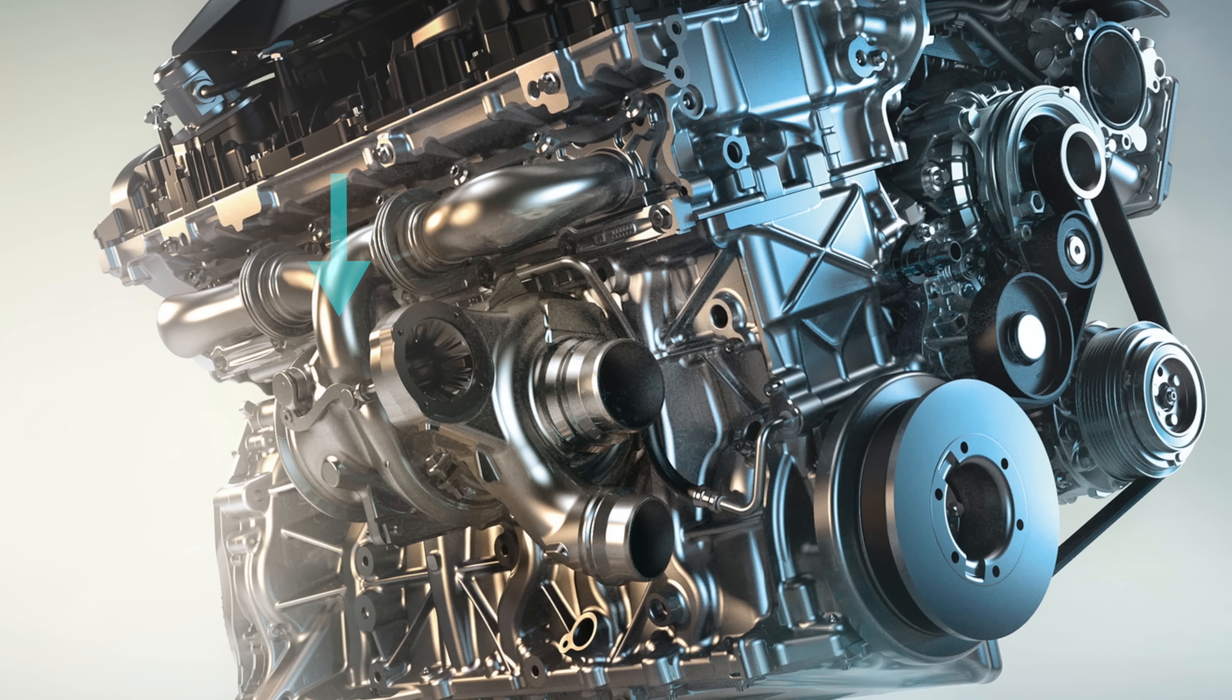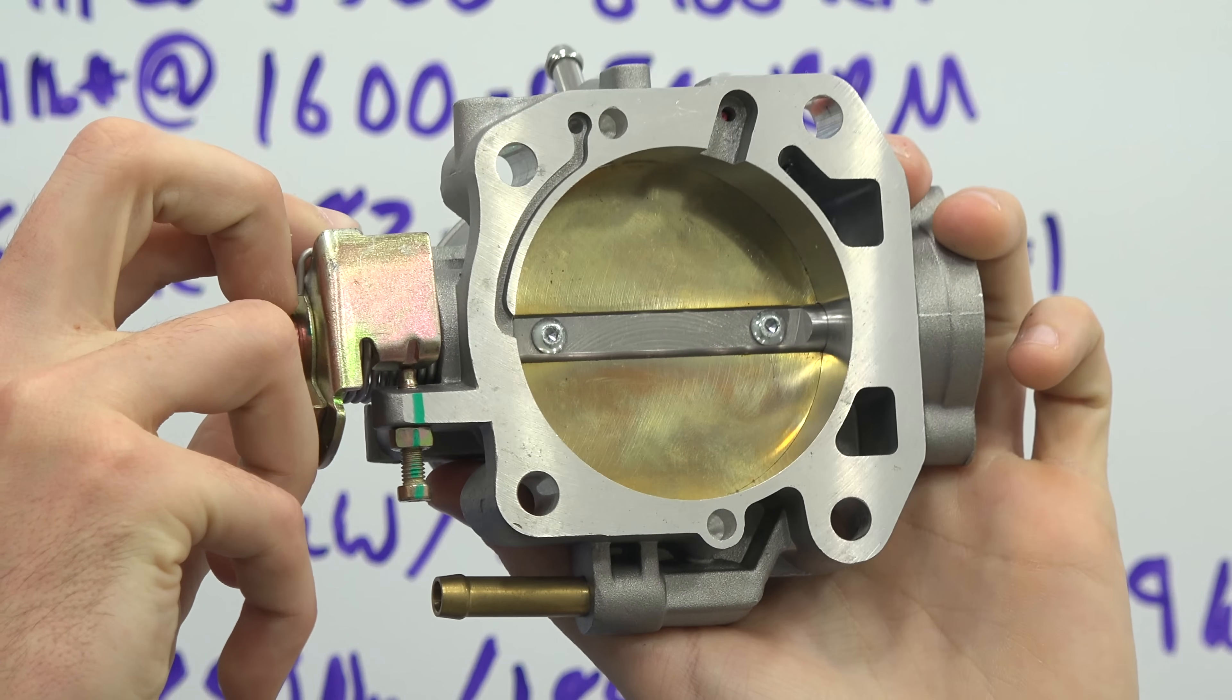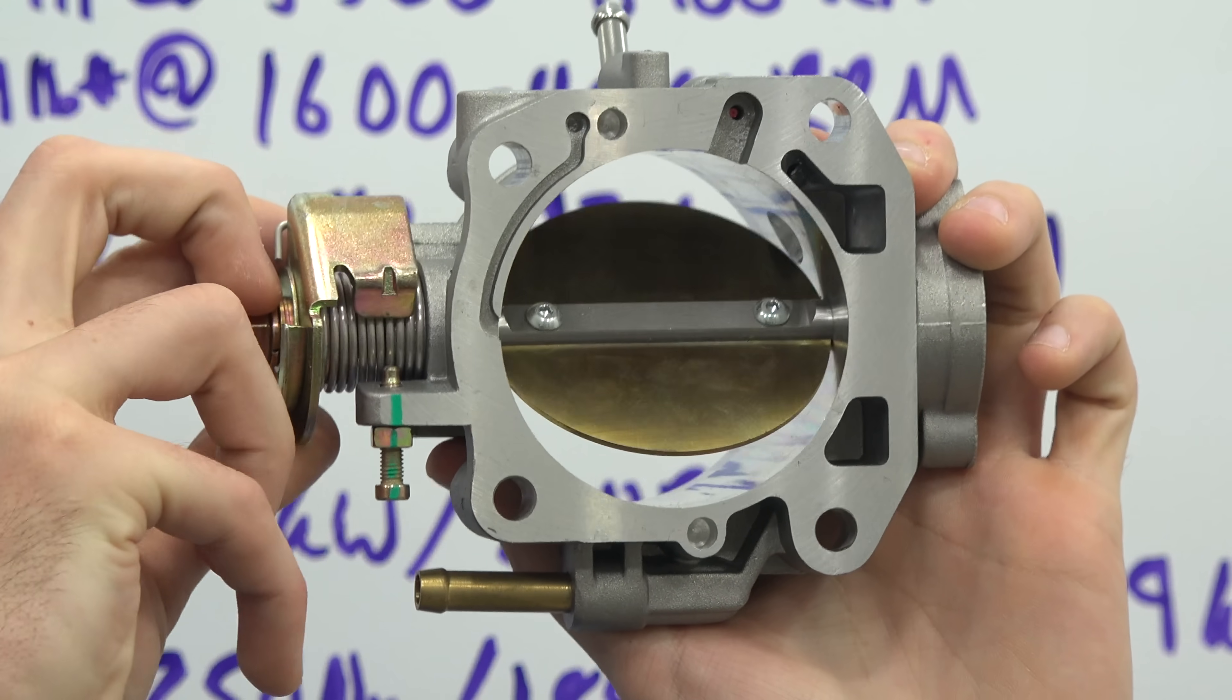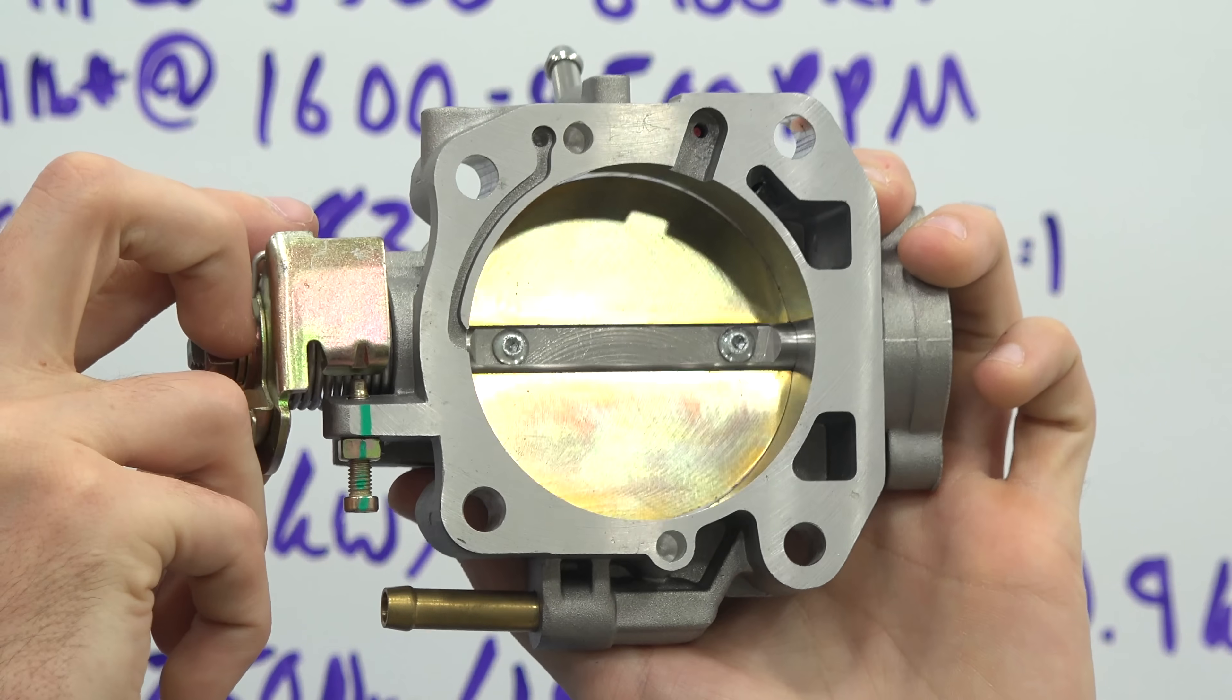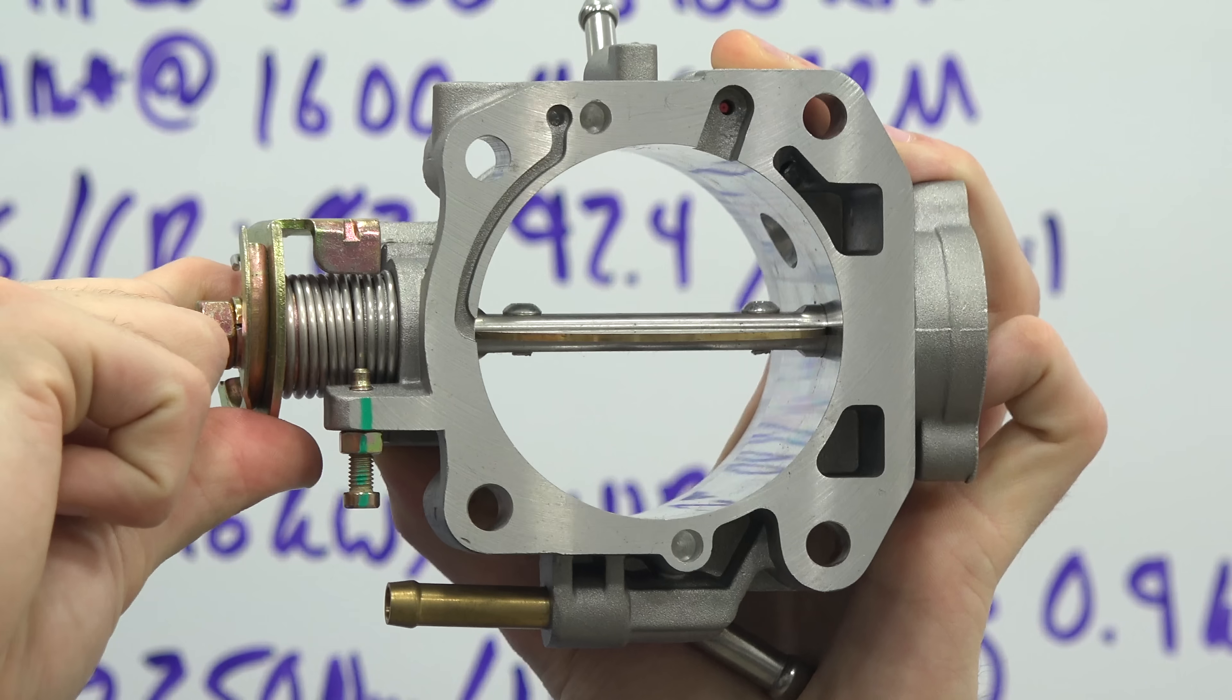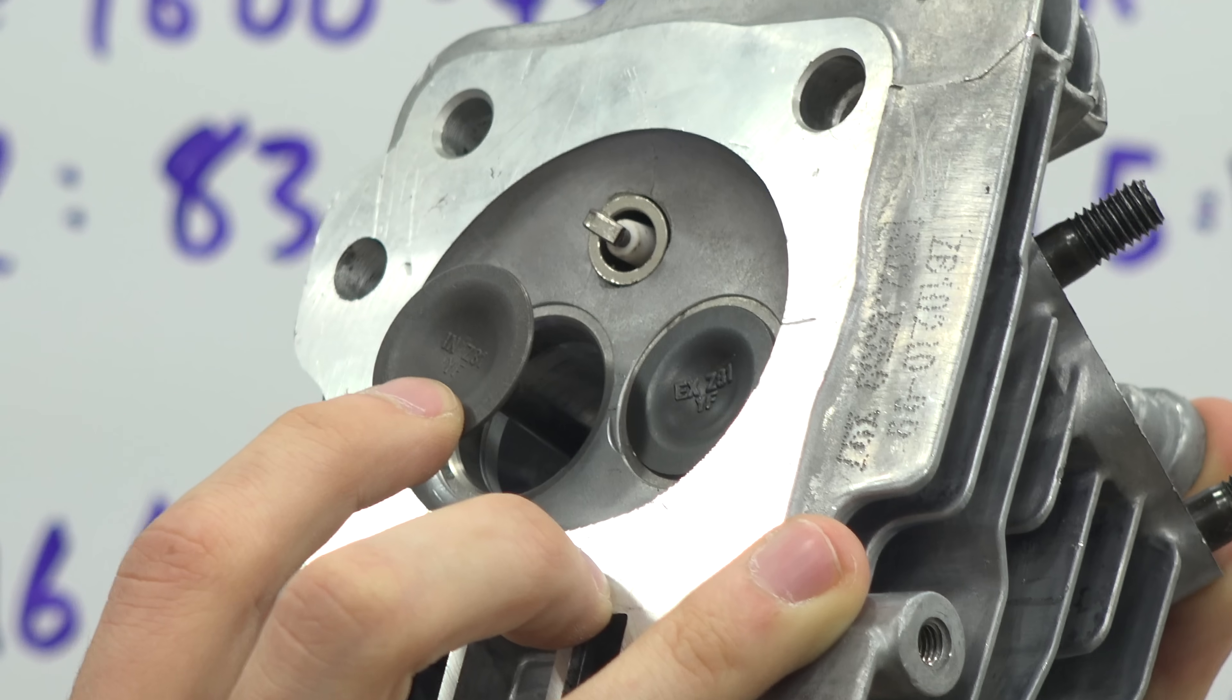This engine also uses BMW's valvetronic. With a traditional engine if you want to make more power you simply open up your throttle valve. If you want to make less power you reduce how open that throttle valve is. So changing the throttle valve's angle changes your engine's load. Now BMW does things differently. They decide that the throttle valve will just simply remain open. In order to control the engine's load, you simply change how much you open the intake valve.